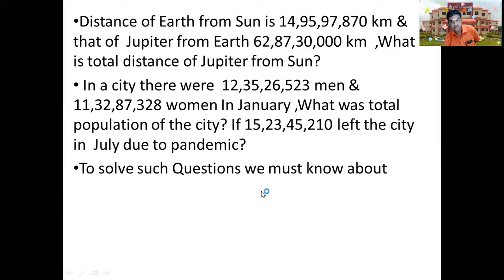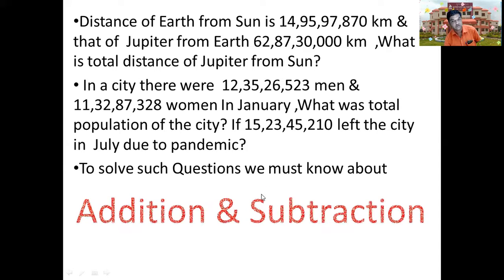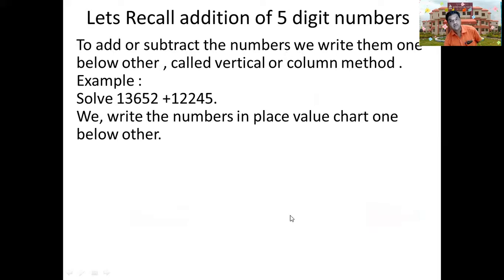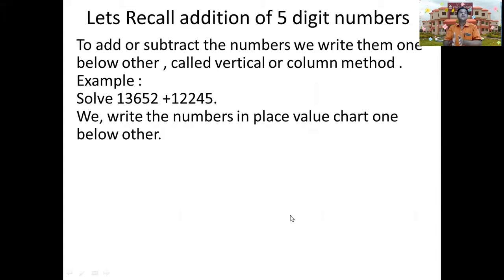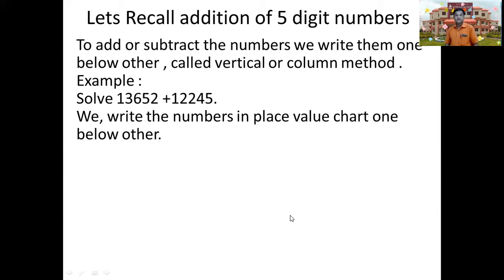How are we going to carry out addition and subtraction of large numbers? Let us first recall addition of five-digit numbers. To add and subtract numbers, we write them one below the other such that the ones place of one number comes exactly below the ones place of the other number, and similarly the tens place aligns below the tens place. This is known as the vertical method or column method.